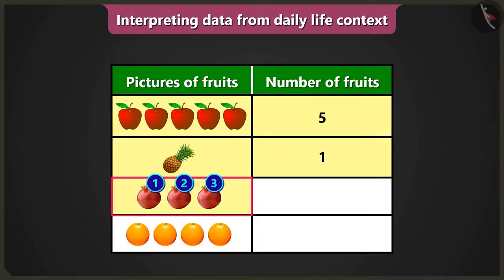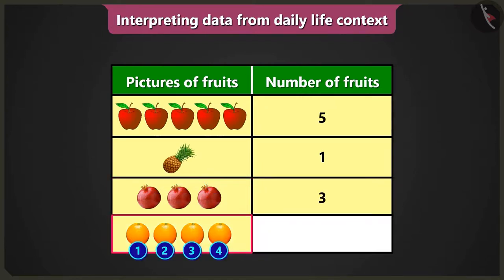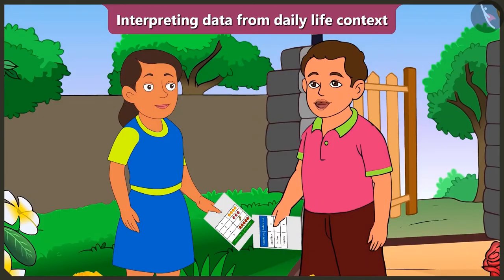There are three pictures of pomegranate, so we have to write the number of pomegranates, three, in the column of number of fruits. There are four pictures of oranges, so we have to write the number of oranges, four, in the column of number of fruits. Absolutely right, Bubbly. Now you will be able to interpret the data given in the table, won't you? Yes, it is very easy to interpret the data given in the table.